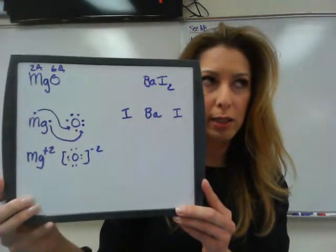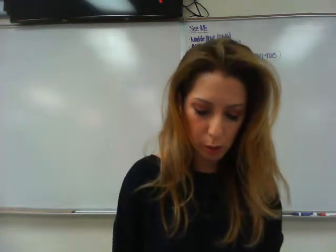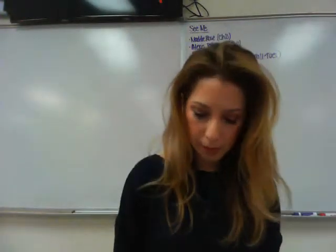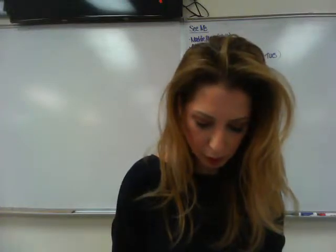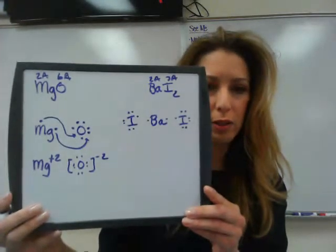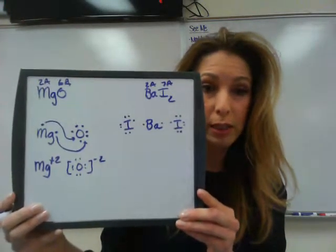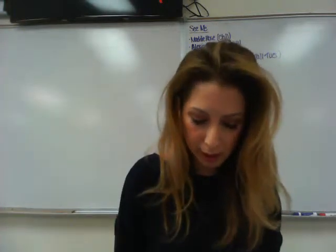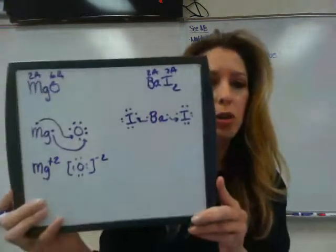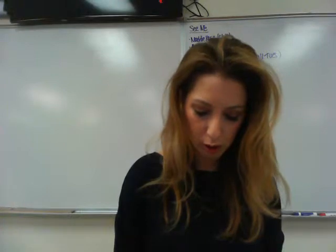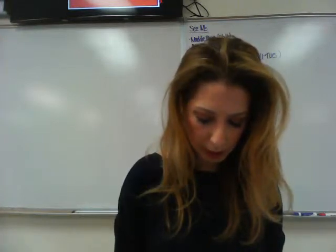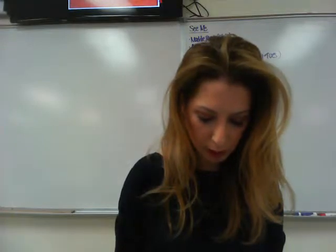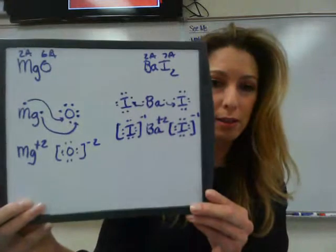Barium is in group 2A, whereas iodine is in group 7A. Iodine has seven dots on it, and barium has two. Barium wants to give up its valence electrons to iodine, but since barium has two valence electrons to give up, it needs two iodines because it can only give one to each, since iodine already has seven on it. So barium is going to give up those two electrons, forming a plus two charge, and then iodine is going to have eight dots on it in a bracket with a negative one charge because it accepted one valence electron.